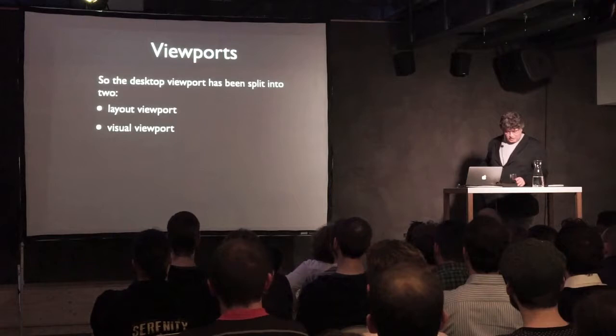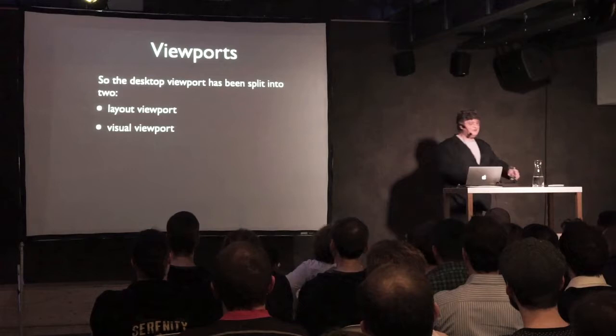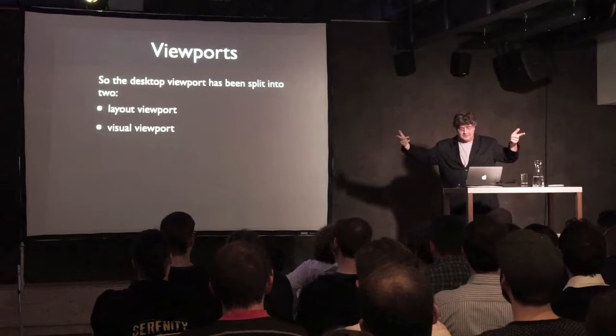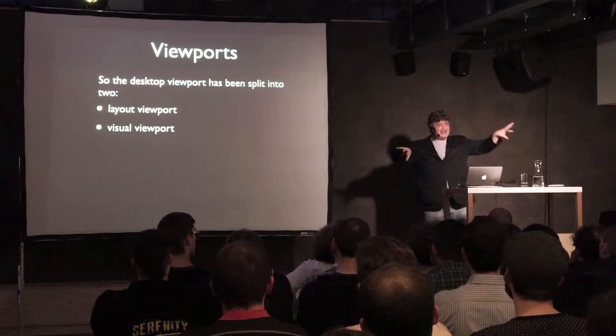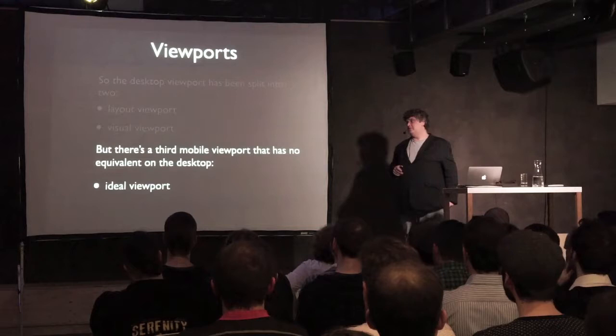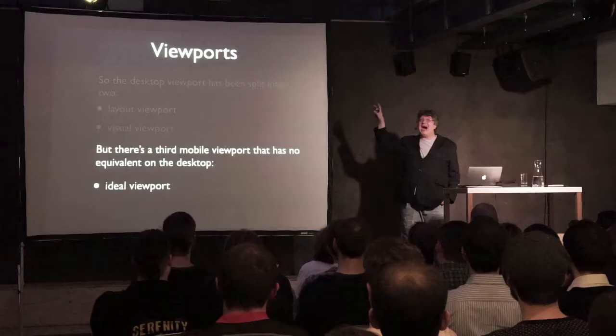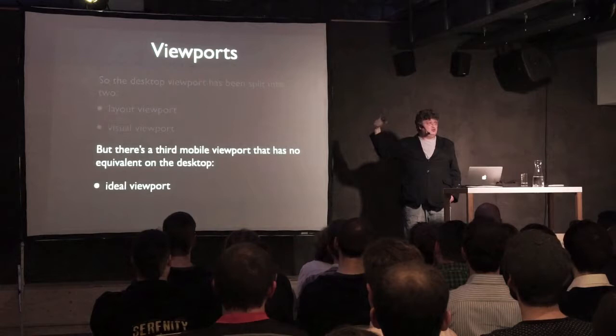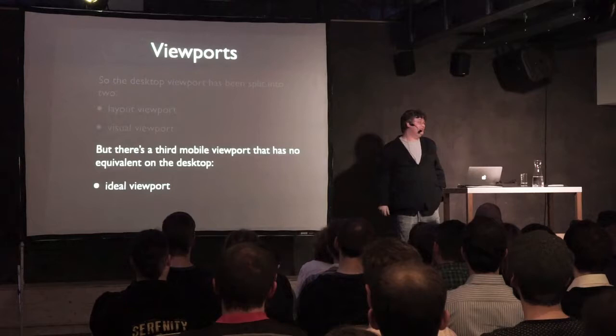So what we've seen is that on desktop there's one viewport that both constrains your CSS layout and defines what the user is currently seeing. On mobile, these two functions have been split: the layout viewport tells CSS how much space it has, and the visual viewport defines what the user currently sees. However, there's a third mobile viewport — one with no equivalent on desktop — which I call the ideal viewport. This is totally my own name for it; nobody else has talked about this. I've been testing since early 2010 to understand what browsers do with the viewport, and in the process I had to invent some names.